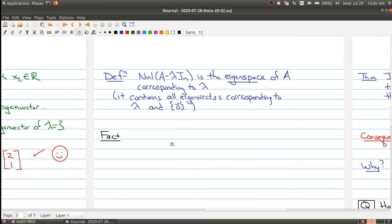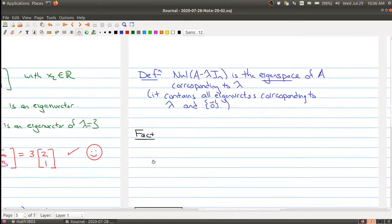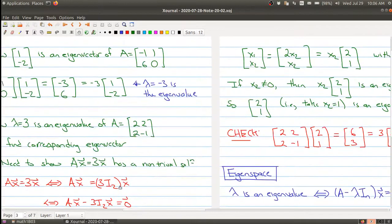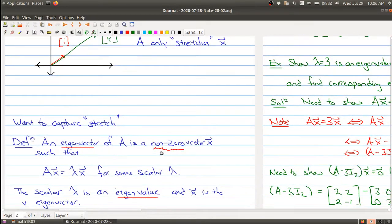And so because this is important, we're going to actually give a name to this set. Okay, so the null space of this matrix A minus lambda In is called the eigenspace of A, is the eigenspace of A corresponding to the eigenvalue lambda. So it's the eigenspace. So it contains all the eigenvectors corresponding to lambda. And it also contains one more vector, it contains the zero vector. Because this is a key thing to remember when we're defining the eigenvalue, let's go right back to the definition, is that an eigenvector has to be a non-zero vector.